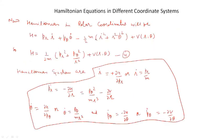The Hamiltonian in polar coordinates is H equal to pr r_dot plus p_theta theta_dot minus L. Substituting the values of r_dot and theta_dot and the Lagrangian, the Hamiltonian simplifies to H equal to (1/2m)(pr² + p_theta²/r²) plus V(r, theta).